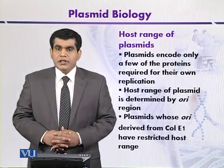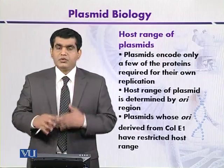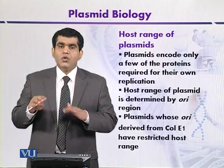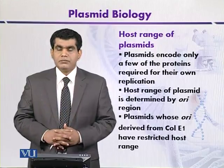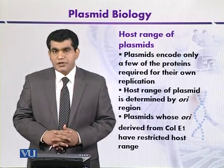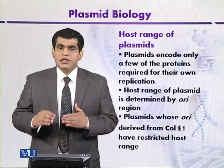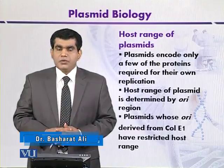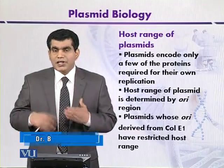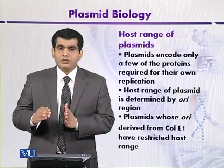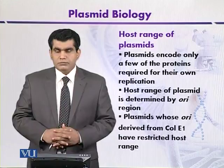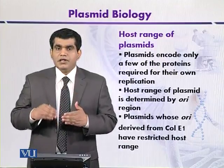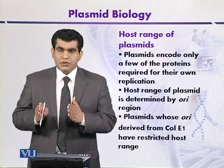The genes encoded by the plasmid for its own replication are located very close to the ORI, or origin of replication — the point where DNA replication mainly starts. So the essential genes that encode proteins for plasmid replication reside very close to the origin of replication.